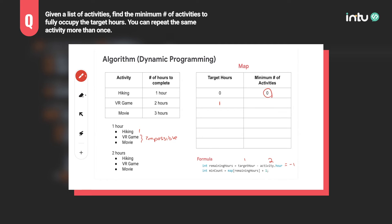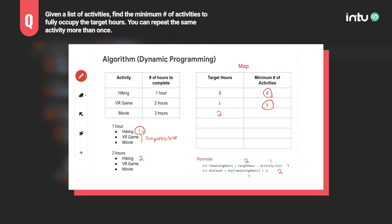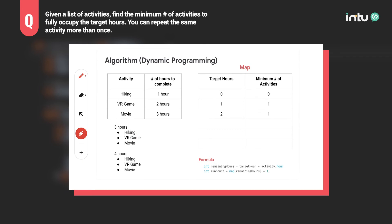Let's do something similar for target hours equals two. When we choose hiking: target hours is two, activity hours is one, remaining is one. Map of one is one, so one plus one is two — min count is two. For VR game: target hours is two, activity hours is two, remaining is zero. Map of zero is zero, plus one is one — min count becomes one. Movie is impossible. Out of these, one is the smaller value, so we update the map for two hours with one.